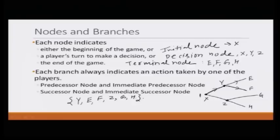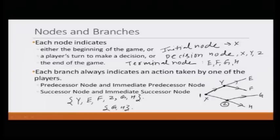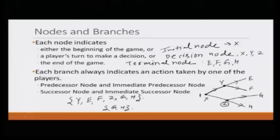An immediate successor node is the node reached directly when a player takes one of the available actions at a given node. For example, for node x, y and z are the immediate successor nodes. For node z, g and h are both the immediate successor nodes and also the only successor nodes of z.